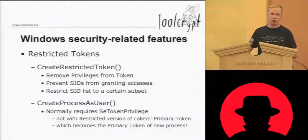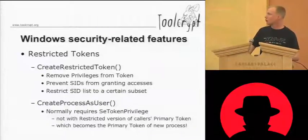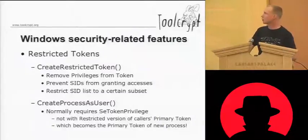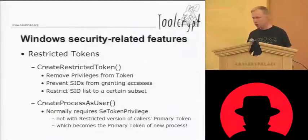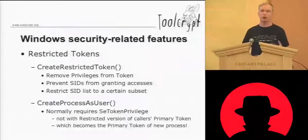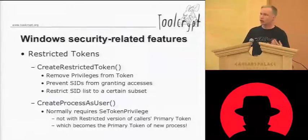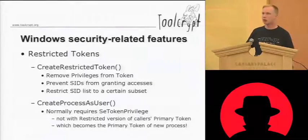When you've got a token — for example, the primary token of your process — and you've restricted it, removed all the privileges that you don't want, and perhaps added or subtracted from the SID list, you can take that restricted token and pass it as the first parameter to CreateProcessAsUser. CreateProcessAsUser is normally used by the system only to create new processes, and it assigns the primary token of the new process accordingly.